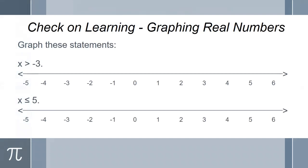On a blank piece of paper, go ahead and draw a number line across. Mine goes from negative five to positive six. Draw a straight line across and number it. I'm going to do that twice because we've got two statements. On the top one, graph x is greater than negative three — not greater than or equal to. And the other one is x is less than or equal to five.